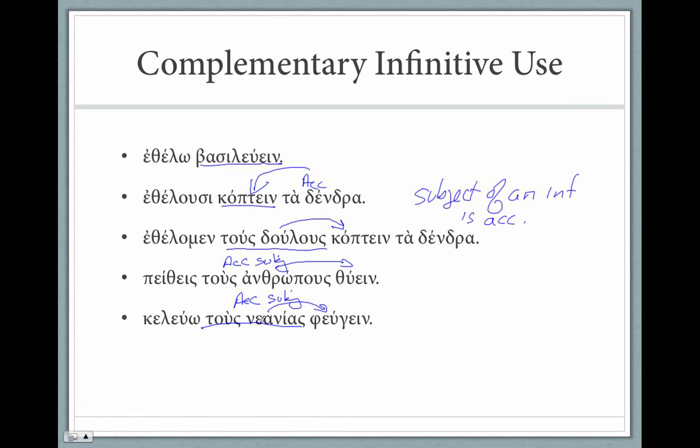One last piece of information. If you want to negate this infinitive, if you want to say I'm ordering the young men not to flee, we're not going to use ou. Instead, we're going to use me. Keleuo tous neanias me pheugein. In general, me is used to negate infinitives. You are persuading the men not to sacrifice. Me thuein, not ou. Me is our negative here.